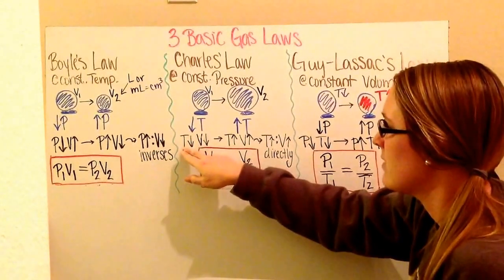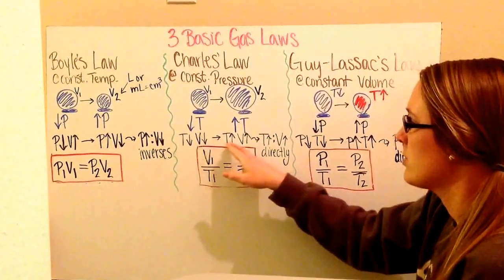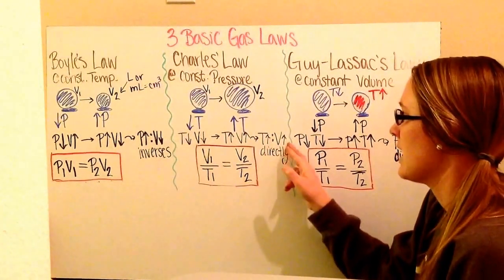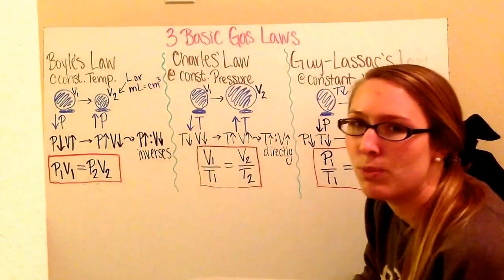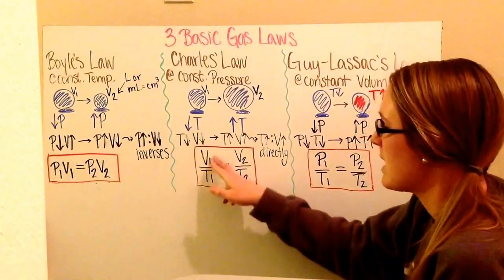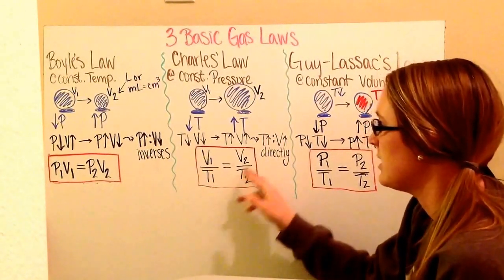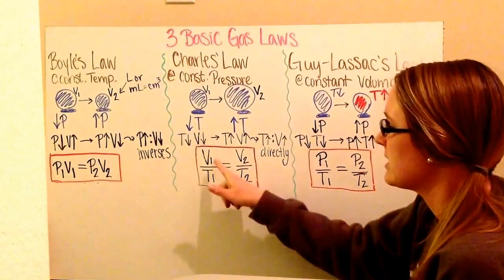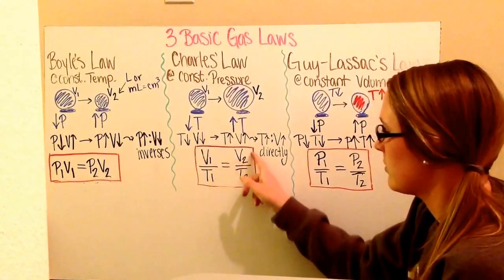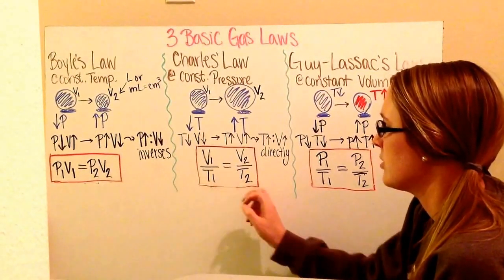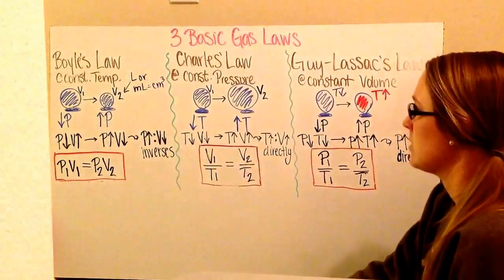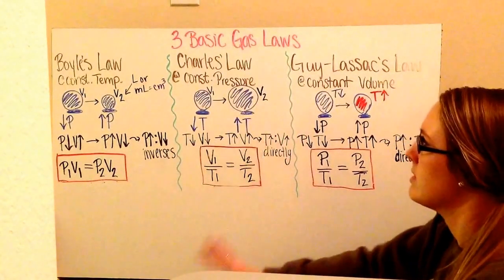At the beginning, I have a small temperature and a small volume. Afterwards, I have a high temperature and a high volume. So as my temperature is increasing, so is my volume. Therefore, they are directly proportional — they have a direct relationship. To show that, we have V1 divided by T1 is equal to V2 divided by T2, because volume and temperature increase or decrease equally. Take a moment to copy this down.